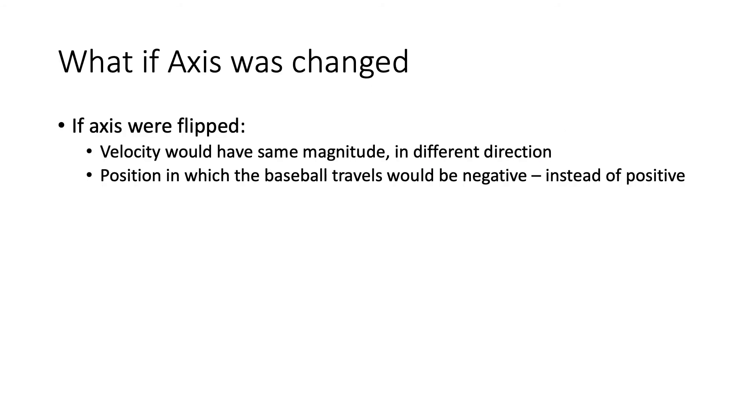A couple questions that we have to talk about in this lab. The first one is what if the axis was changed? Specifically, if the axis were flipped. If the axis were flipped, then our velocity would have the same magnitude. However, it will be in a different direction. That arrow would be 180 degrees flipped against itself. So the position in which the baseball travels will be negative now instead of positive the way I defined it in Tracker.